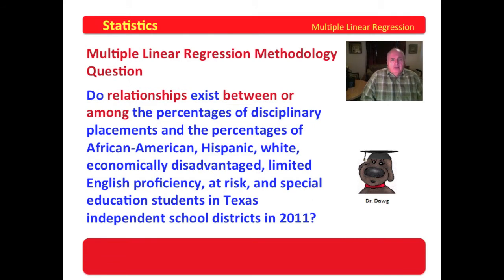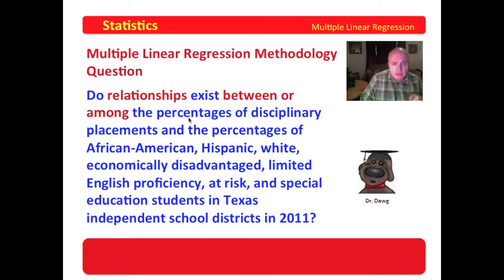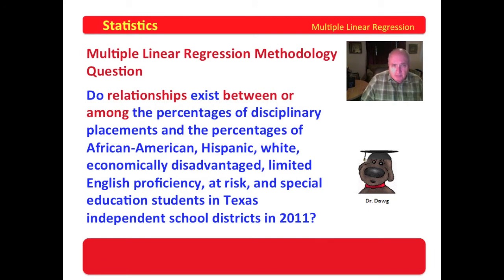Multiple linear regression methodology questions focus on relationships. You could say, do relationships exist? Do associations exist? I use 'between or among' because we have several variables. This is a little different than the question we use for factor analysis. Do relationships exist between or among the percentages of disciplinary placements and the percentages of — and we list these. In the way that I've worded the question, disciplinary placements becomes the dependent variable, and the percentages of these other ones become the independent variable.